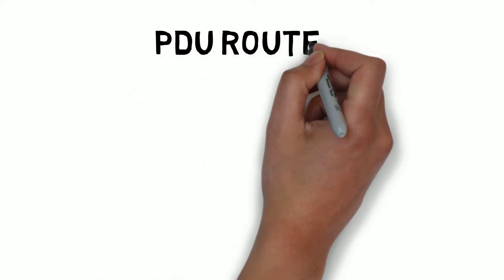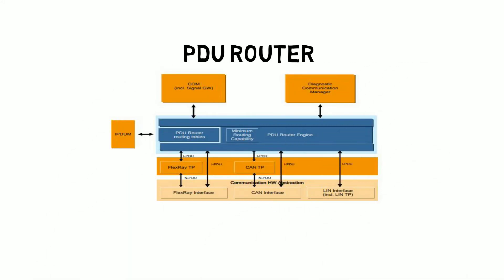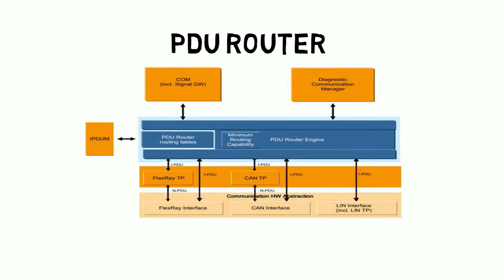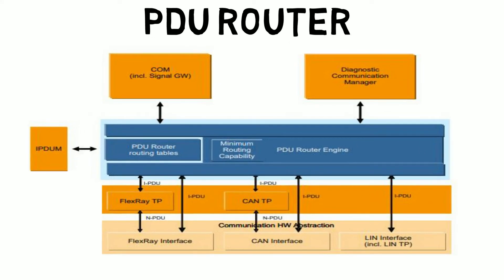In this section we will talk about the PDU router. Once the signals come out of the COM module, they will be pushed to the protocol data unit router. When it comes out of the RTE it is called a signal, and when it comes out of the COM module it is called a protocol data unit.